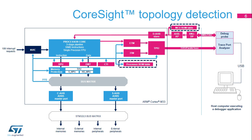The processor ROM table contains the base address pointer for the system control space, or SCS, registers that allow the debugger to identify the CPU core, as well as for the BPU, DWT, ITM, ETM, and CTI. The SCS is a block of registers, including the CPU ID register that indicates the reference and revision of the CPU, used by the debugger to control entry to and exit from halt mode.